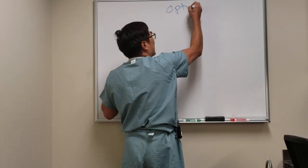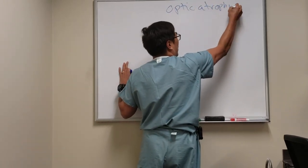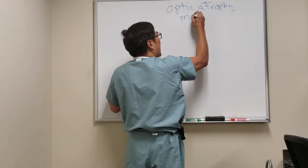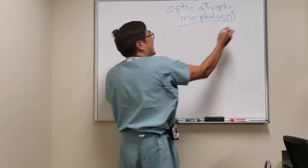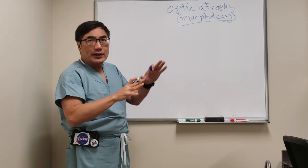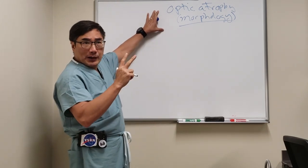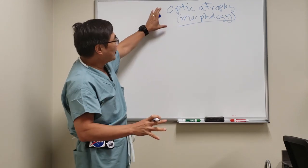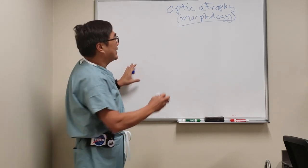Today we're going to be talking about optic atrophy, but not the causes or the workup. We're going to be talking about the morphology — basically, can you look at an optic nerve and tell what the cause was for the optic atrophy? And in general, you can't, because the optic nerve really has only two pathologic responses to disease: it can either swell or it can be pale. However, there are some clues that can be gotten from just looking at the disc head.